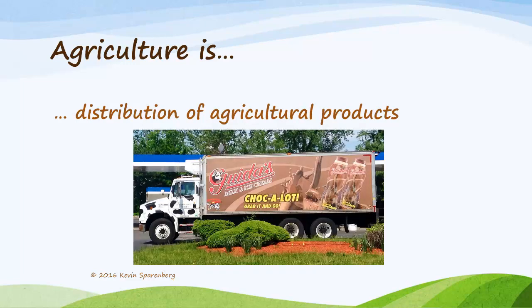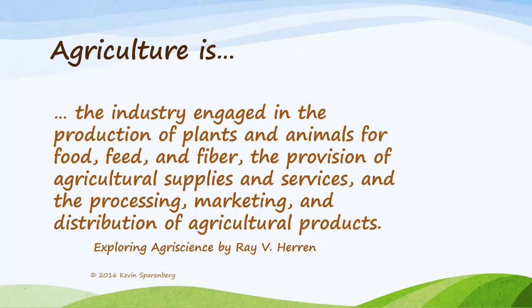The distribution of agricultural products includes activities such as the movement of products from the producer to a processor, then to a retailer, and eventually to the end user. Putting our definition back together: agriculture is the industry engaged in the production of plants and animals for food, feed, and fiber, the provision of agricultural supplies and services, and the processing, marketing, and distribution of agricultural products.